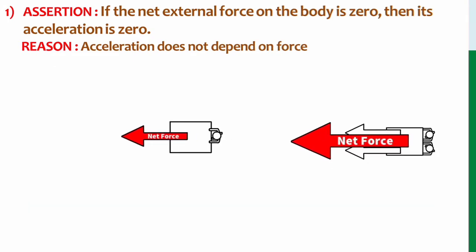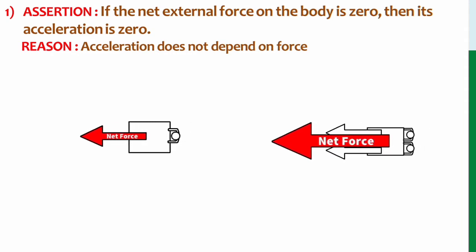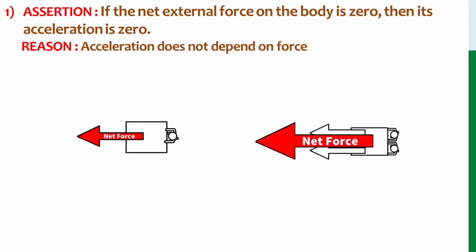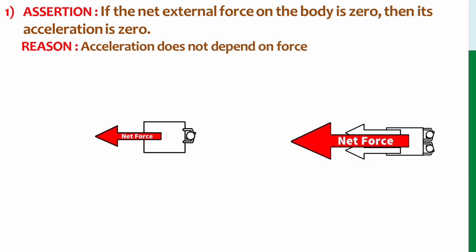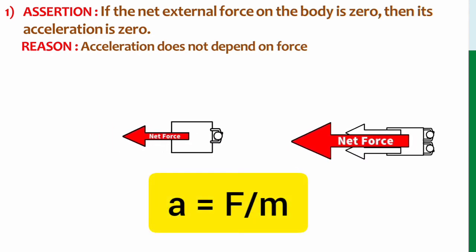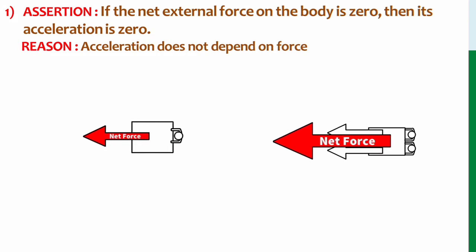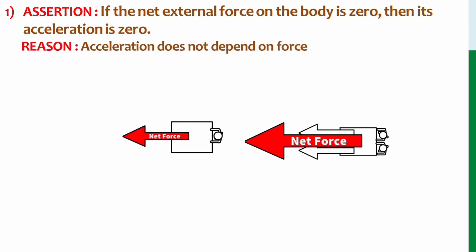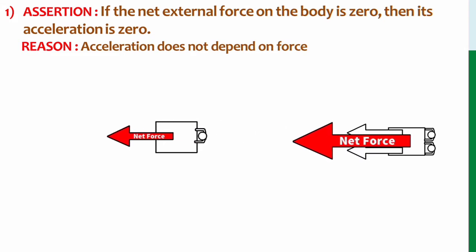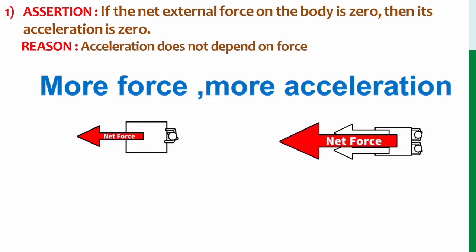We have learnt that whenever an unbalanced force is given on an object, it creates an acceleration on the object. And from second law of motion, we know that F is equal to MA and acceleration is F by M. That means acceleration is dependent on force. If you give more force, then the acceleration will be more. From this we can understand that the reason statement given is false. So reason is false.